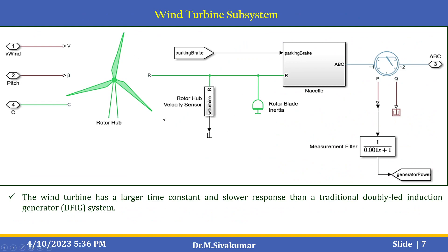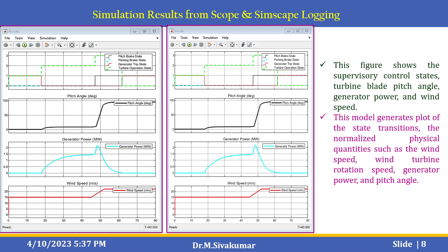This is the wind turbine system. This wind turbine system has a larger time constant and slower response than a traditionally DFIG-generated system. The first figure shows the supervisory control states, turbine blade pitch angle, generating power, and wind speed. The second picture shows the state transitions, with normalized physical quantities such as wind speed, wind turbine rotation speed, generated power, and pitch angles.